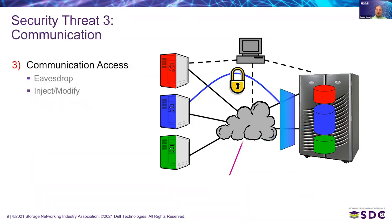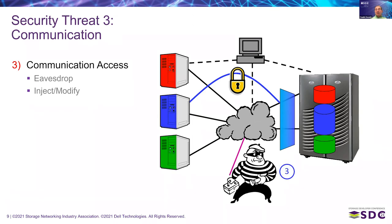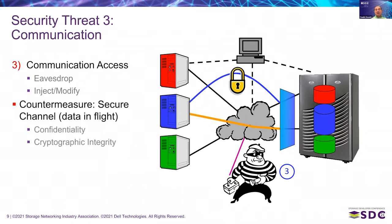Then we have communication access — the possibility for someone to access the communication across the SAN itself. The countermeasure is a secure channel: something able to provide cryptographic integrity and cryptographic confidentiality to every data in flight. This means encryption and integrity of every packet exchanged between host and storage device, to be sure that nothing has been changed, added, or removed while in flight.